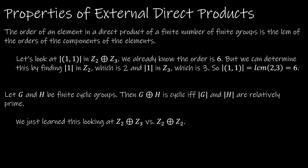We'll finish with a couple of properties of external direct products. The first says: the order of an element in an external direct product of a finite number of finite groups is the least common multiple of the orders of the components. For example, in Z2 cross Z3, the element (1,1) has order 6. The order of 1 in Z2 is 2, the order of 1 in Z3 is 3, and the LCM of 2 and 3 is 6.